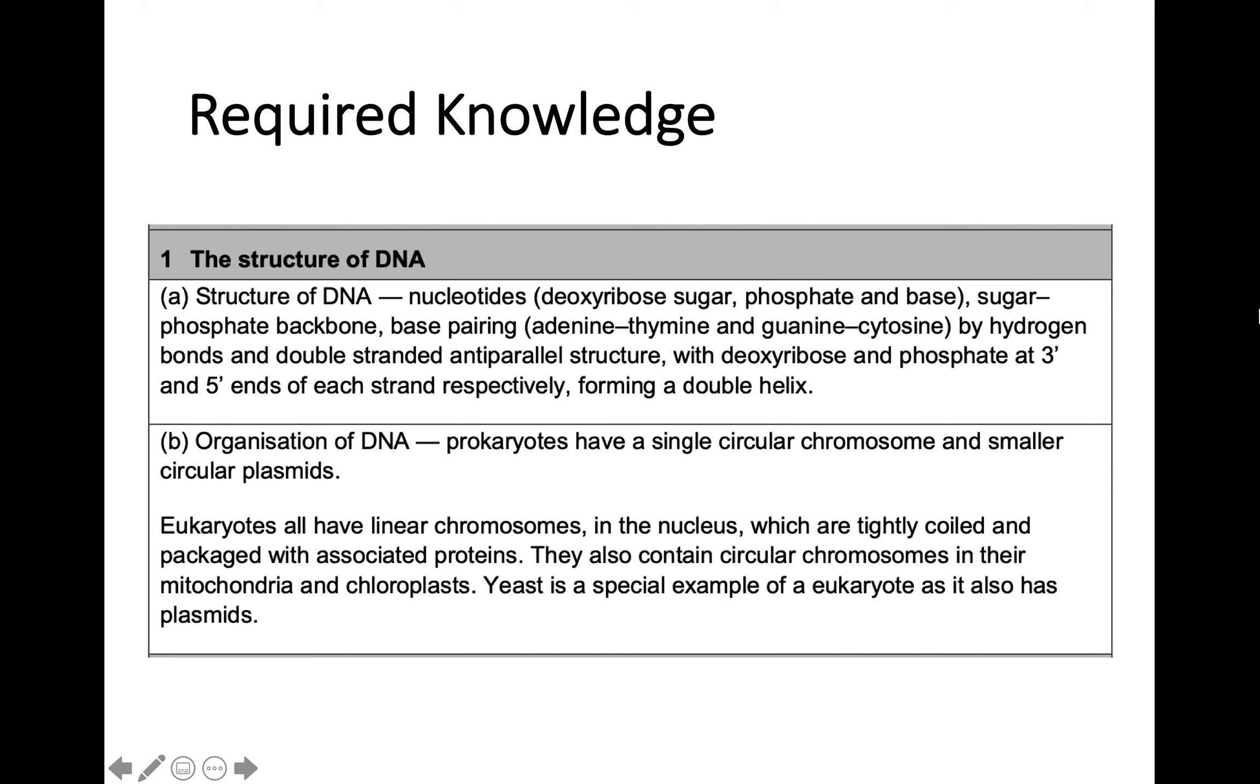So that's it for Key Area 1. It's fairly simple—just going into a bit more detail in terms of the structure of DNA, especially your anti-parallel strands and how your five prime and three prime ends work and how they run down the structure of a DNA molecule. In terms of organization of DNA, I'd suggest going through your old notes of cell biology from National 5 and classify what a bacterial, animal, plant, and fungal cell would be in terms of prokaryote or eukaryote. We'll go into more detail later on in terms of how DNA is organized there.